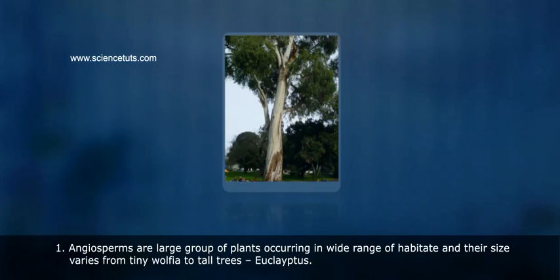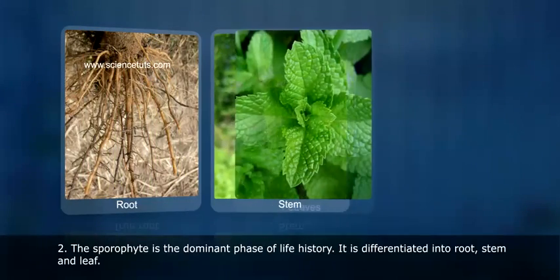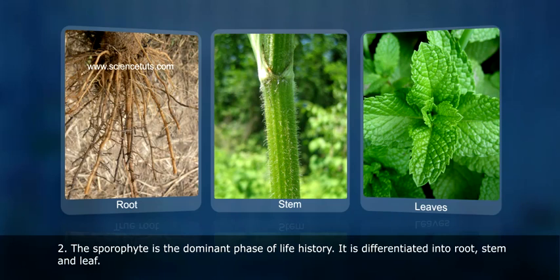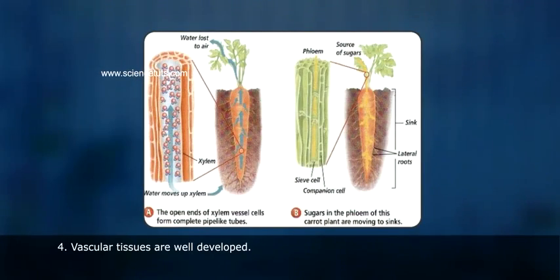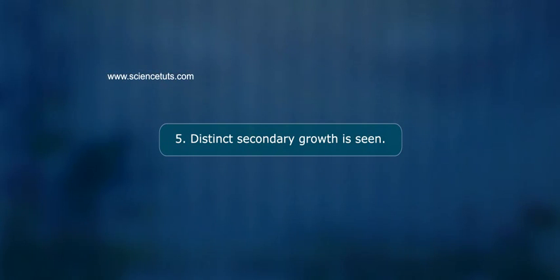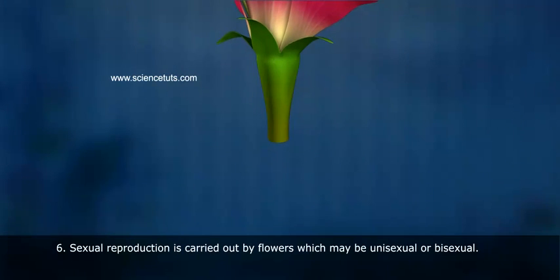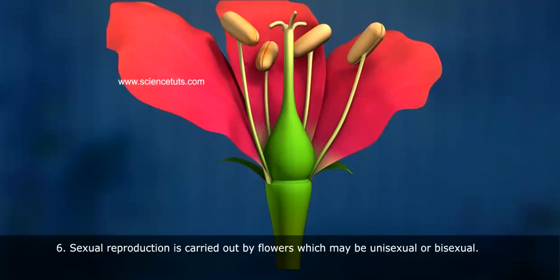One, angiosperms are a large group of plants occurring in a wide range of habitats; their size varies from tiny Wolffia to tall trees like Eucalyptus. Two, the sporophyte is the dominant phase of the life history, and is differentiated into root, stem and leaf. Three, the leaves show distinct venation. Four, vascular tissues are well developed. Five, distinct secondary growth is seen. Six, sexual reproduction is carried out by flowers, which may be unisexual or bisexual.